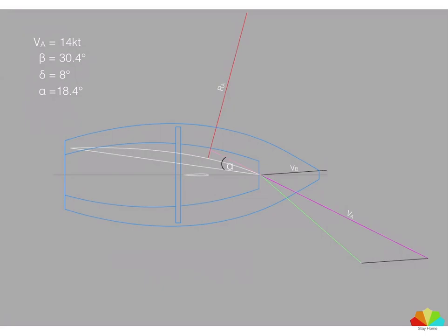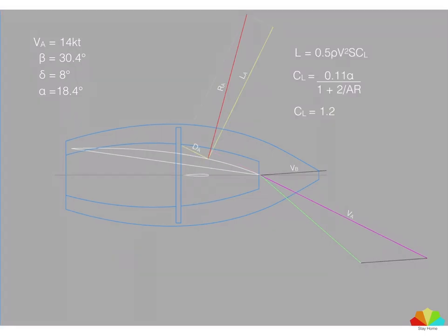As the apparent wind flows over the sail at an angle of attack alpha, where alpha here is just over 18 degrees because it's the apparent wind angle minus the leeway angle minus the sheeting angle, that produces a force which I've labeled here RA. It is convenient to split that force into two components: lift and drag.